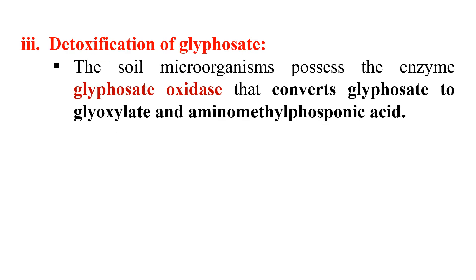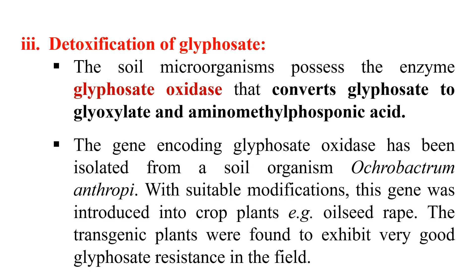The third strategy is detoxification of glyphosate. Some microorganisms have an enzyme called glyphosate oxidase, which converts glyphosate to glyoxylate and aminomethyl phosphonic acid, neutralizing or detoxifying the glyphosate. We isolate the gene for this glyphosate oxidase enzyme and introduce it into our crop plant — generally the gene is taken from the soil organism Ochrobactrum anthropi. With suitable modification we introduce this gene into our plants, and ultimately our plant becomes resistant against glyphosate.